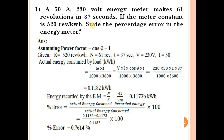Now we will see how to solve it. Assume power factor cos phi is equal to 1. Given: K meter constant value 520 per kilowatt hour, N = 61 revolutions, time = 37 seconds, voltage = 230, current = 50. Now we can calculate the actual energy consumed by the load in kilowatt hours. The formula is W into T divided by 1000 into 3600.